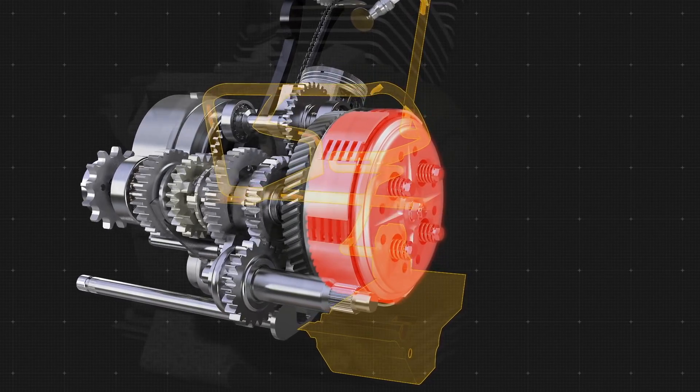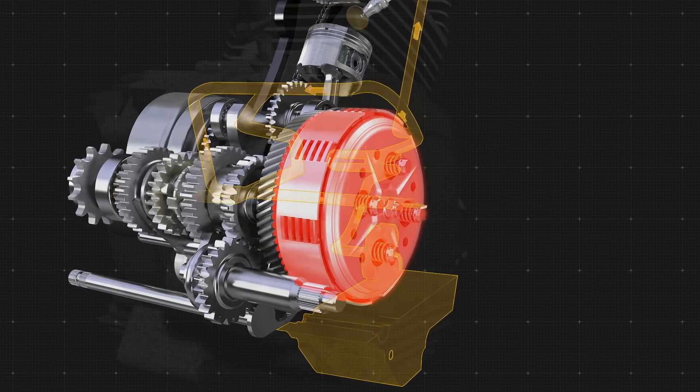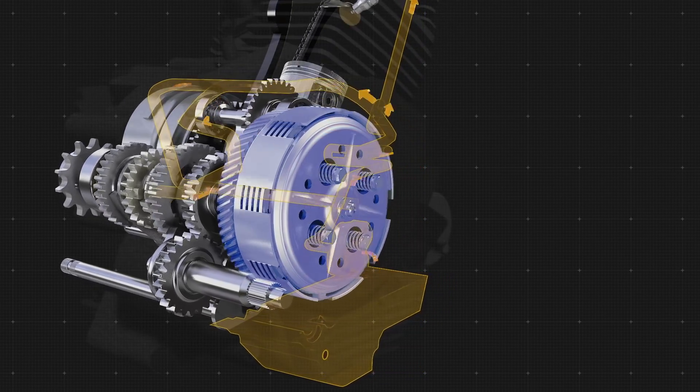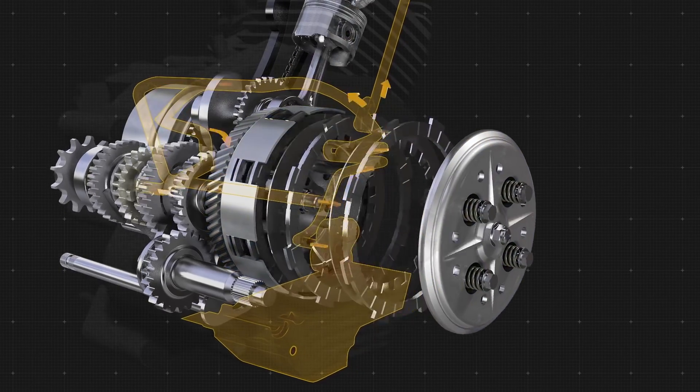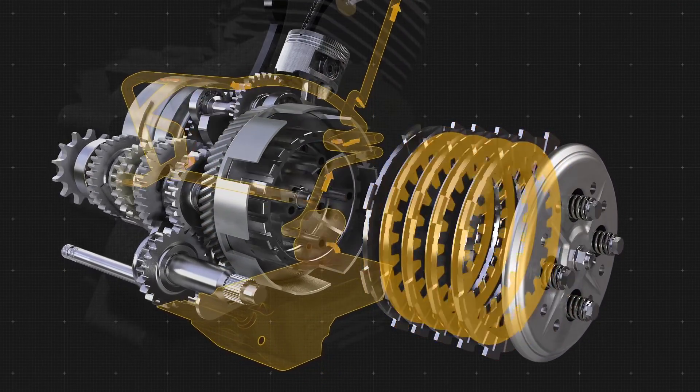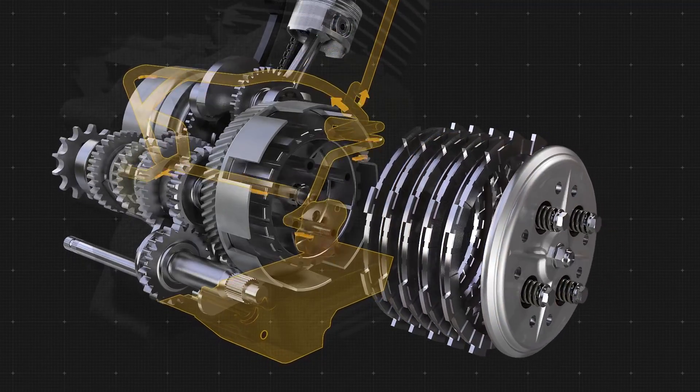In the clutch, the oil's versatility is tested even more. While cooling remains a key function to prevent overheating, the lubricant must also allow for the right amount of friction between the plates and discs for the mechanism to function properly when engaged.